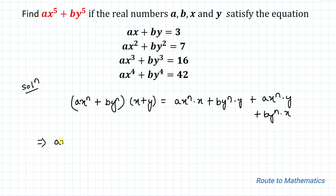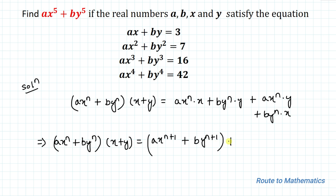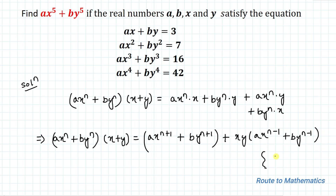This gives us: ax to the power n plus by to the power n, multiplied by x plus y, equals ax to the power n+1 plus by to the power n+1, plus xy multiplied by ax to the power n minus 1 plus by to the power n minus 1. So we have found a recurrence relationship.